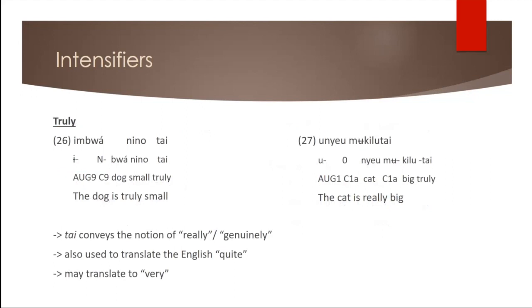So thai is very interesting and once again, it can stand for several English expressions that are fairly similar. So literally thai would mean truly because it's connected to or comes from a word meaning truth, but it also conveys the notion of really or genuinely and can be used to translate the English quiet or fairly. And because of the proximity between really and very, it's also used to translate very once again. So wani no thai, for example, would be the dog is truly small or the dog is very small.